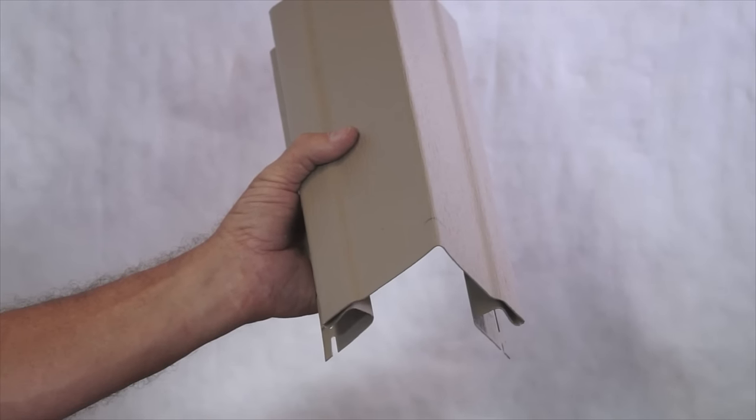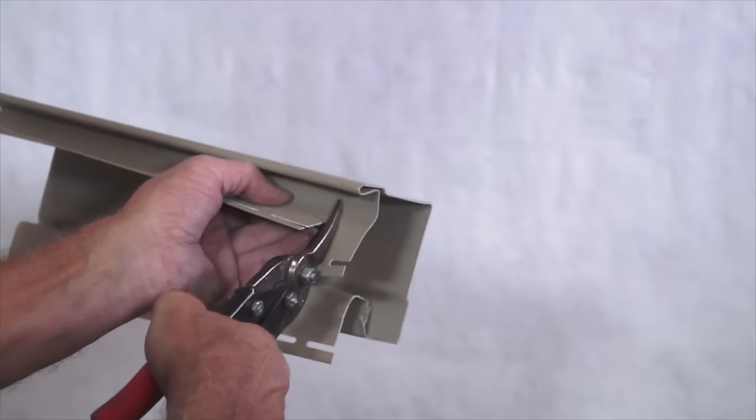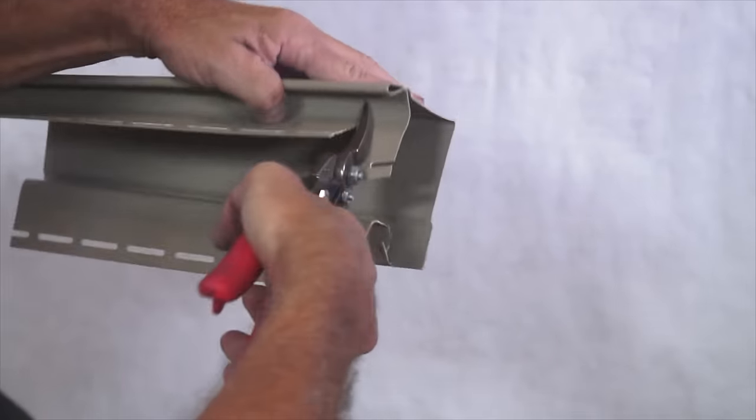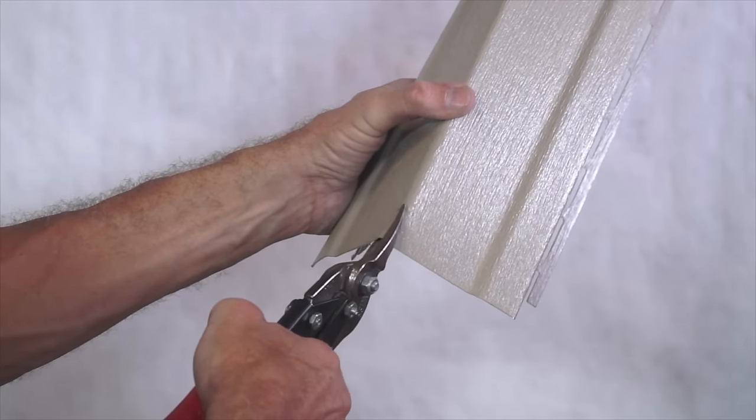In some situations, you will want to close off the bottom of the corner posts. This can be done by removing the bottom inch of the nail flange and channel from both sides of the post. Now, cut and bend the flaps to close off the post.